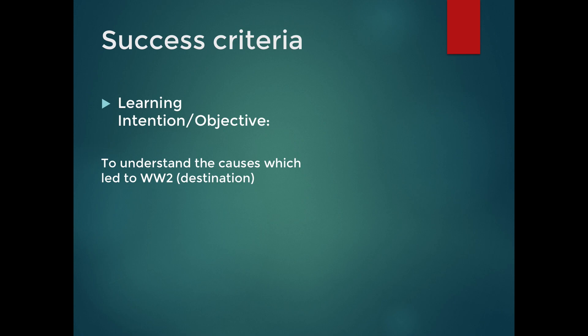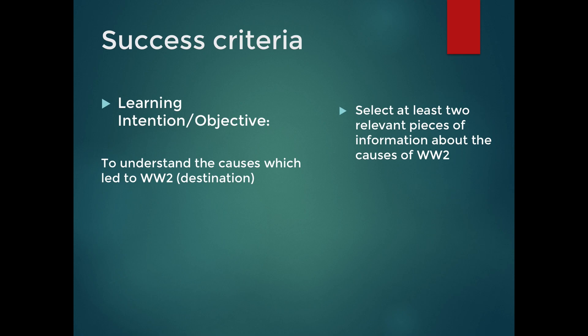Once the learning intentions and objectives have been firmly set, they need to be broken down into success criteria. Consider it like a recipe — you're trying to make spaghetti bolognese, that's your destination, that's your endpoint, but that doesn't tell you how to get there. That's what the success criteria is. You would expect to find in the recipe criteria such as: to boil the pasta for a certain amount of time, or to make a rich tomato sauce requiring certain ingredients and a certain methodology. This is what the success criteria does — it clearly breaks down those steps towards getting to that final outcome and intention.